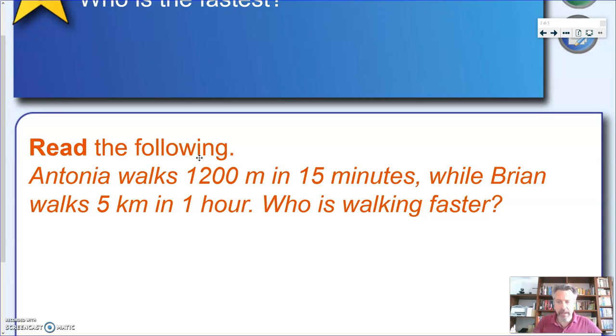Again, this might not be helpful because here we have kilometers, so we need to change that into kilometers. If I change 4,800 meters in kilometers, it will be 4.8 kilometers, which is less than 5, so Brian is walking faster because in the same amount of time, he walked a longer distance.